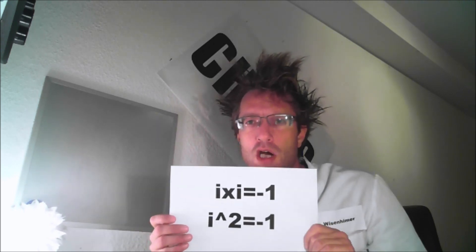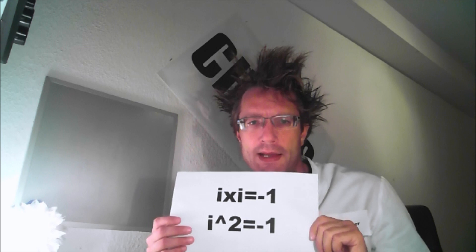Carl Friedrich Gauss then introduced the imaginary number i and stated that i times i is negative 1, and this can be written as i squared equals negative 1. So far, so good.